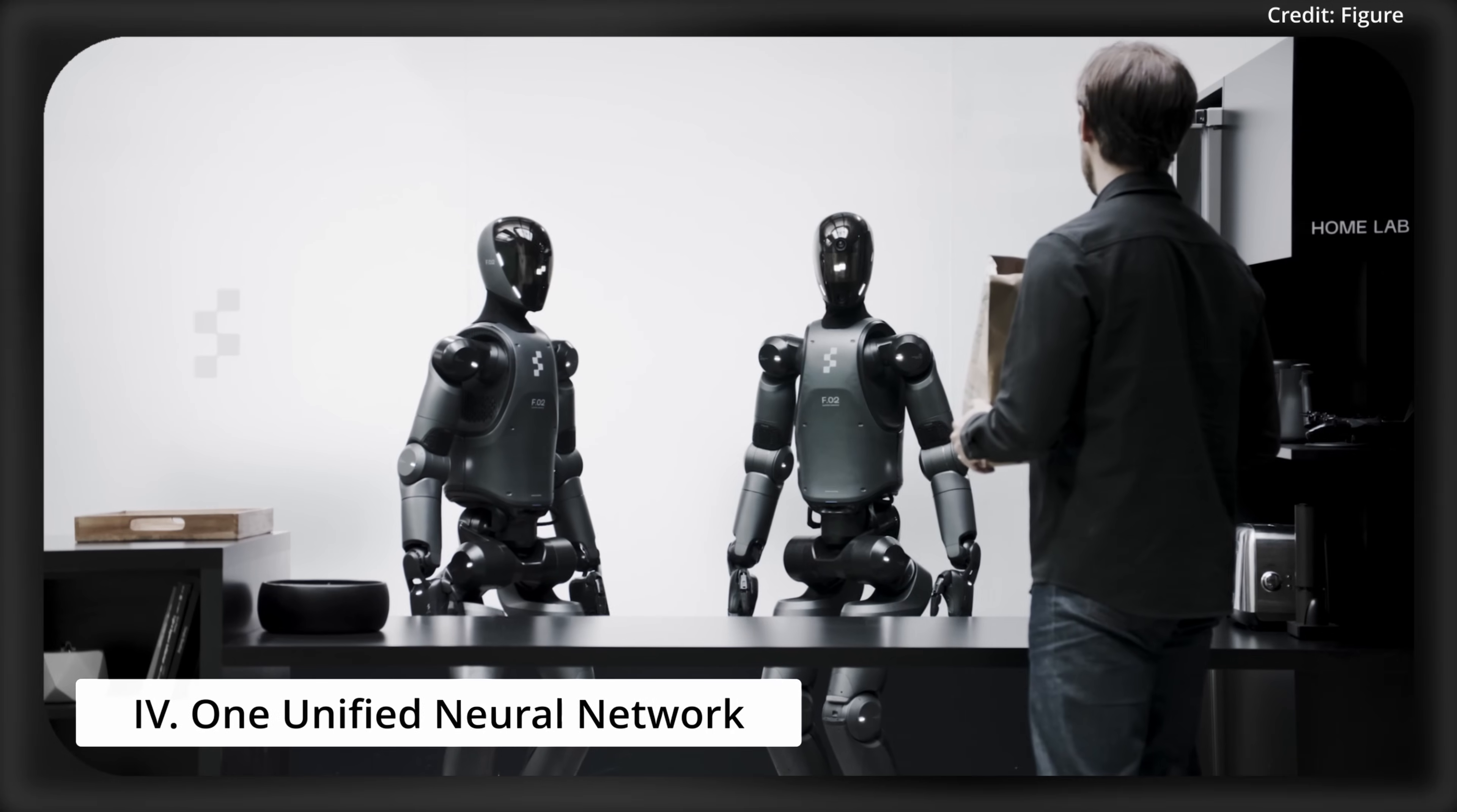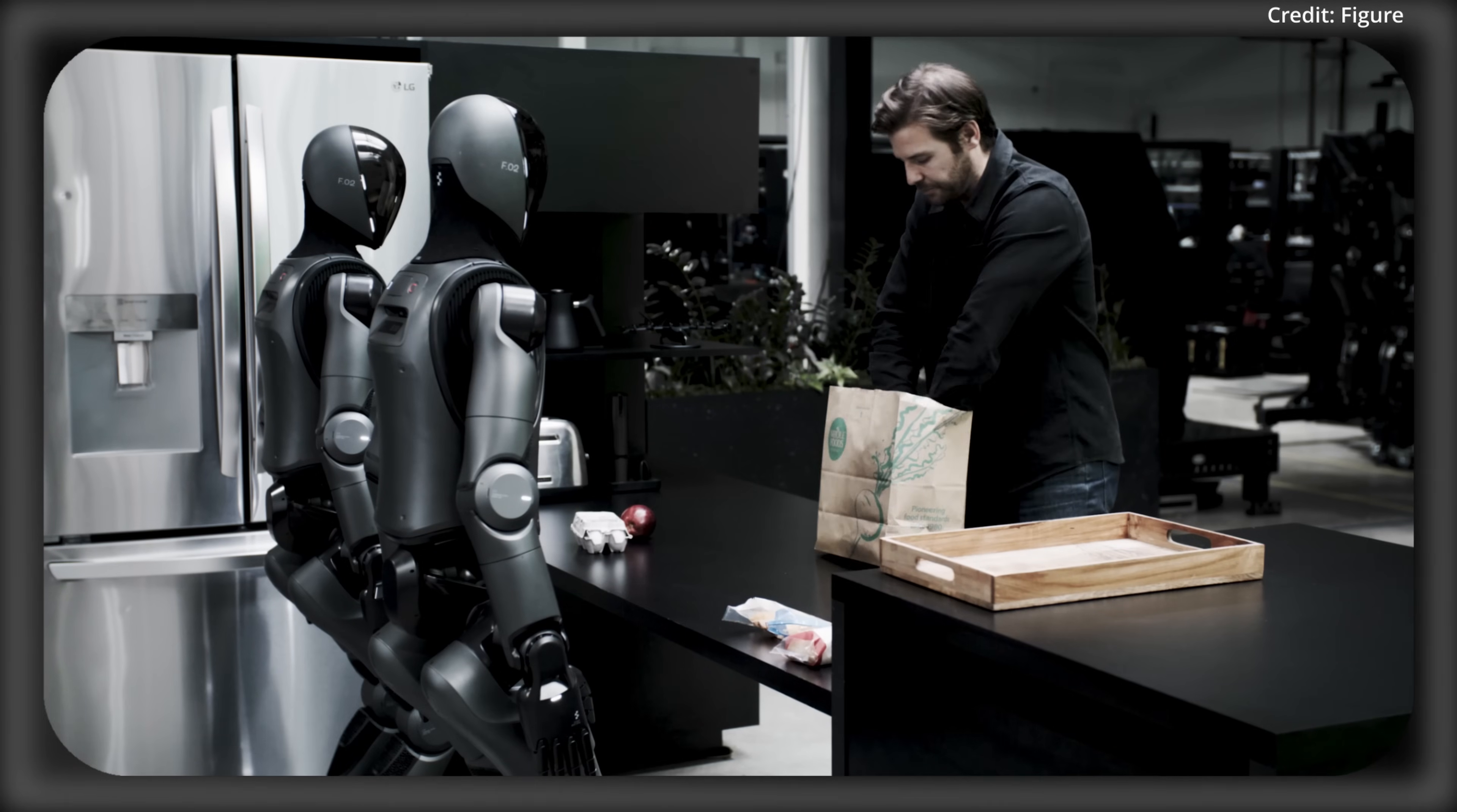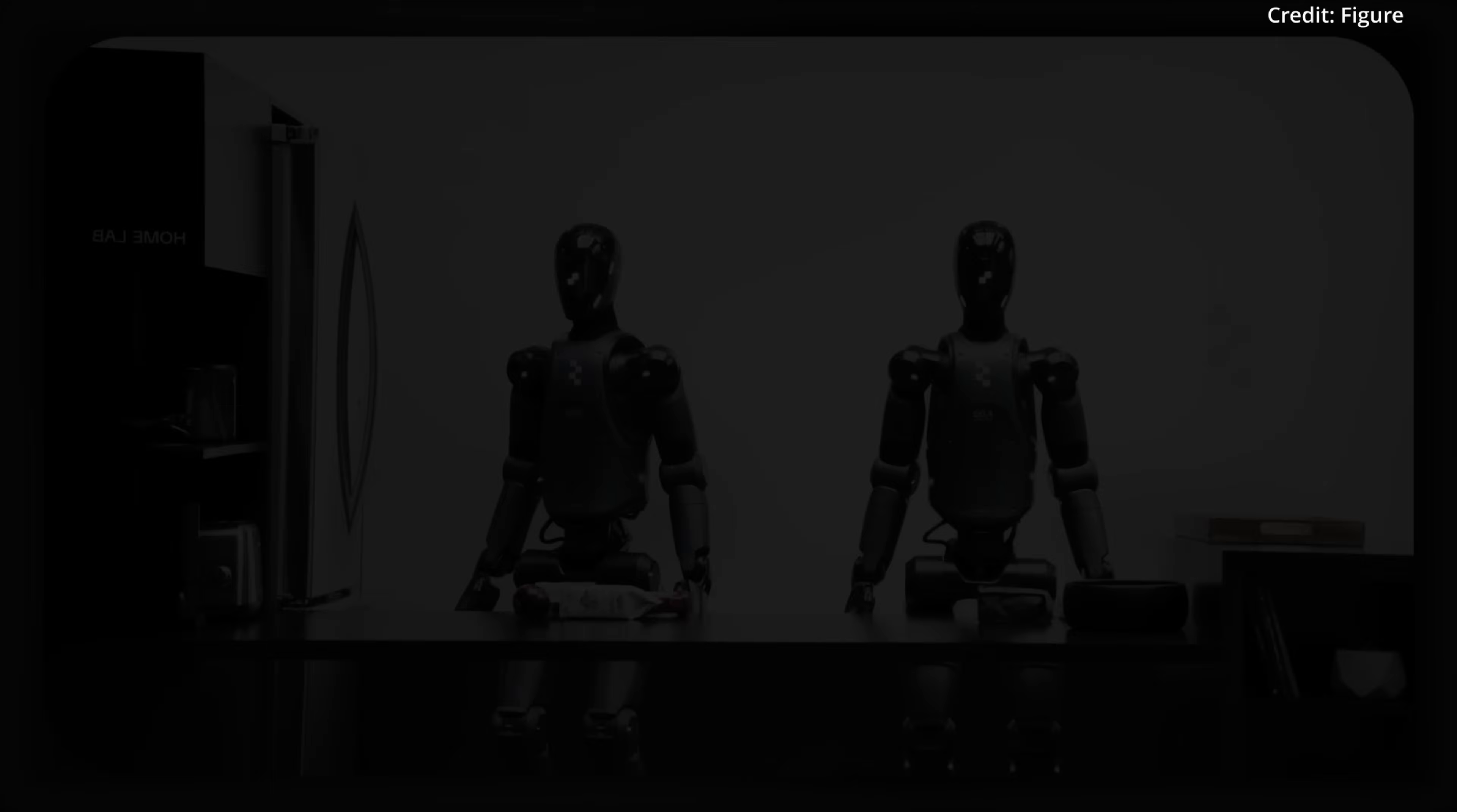Number four: One Unified Neural Network. Unlike earlier vision-language action models that needed task-specific tweaks or multiple action heads, Helix excels with a single neural network totaling 7 billion parameters for planning and another 80 million parameters for control. This lone model powers picking and placing, operating drawers and fridges, and multi-robot handovers, all while generalizing to new objects with no fine-tuning and no extra stages, just raw versatility.